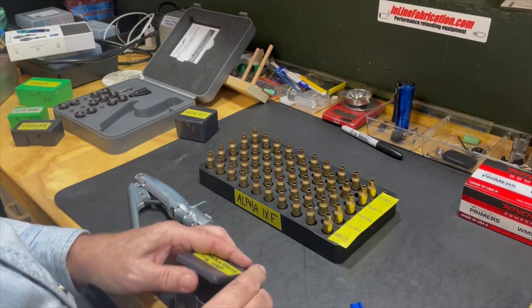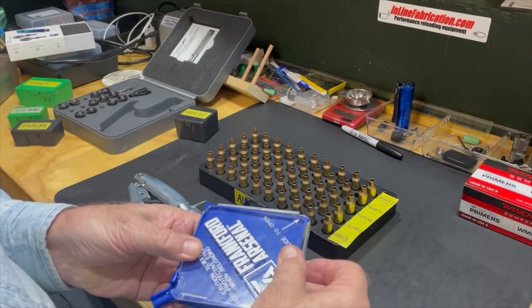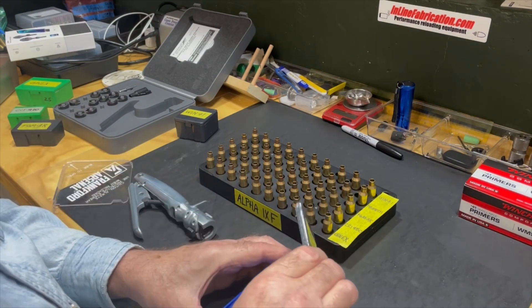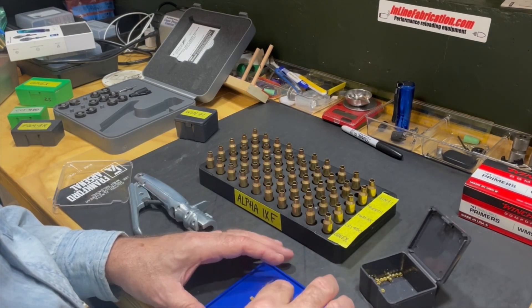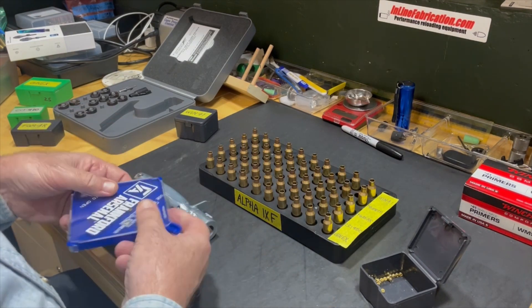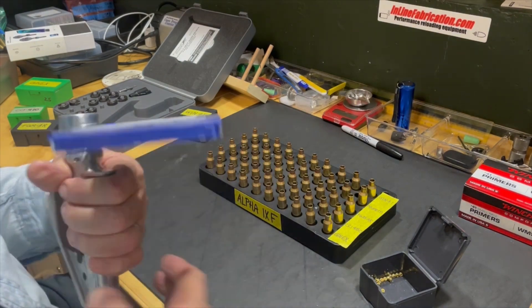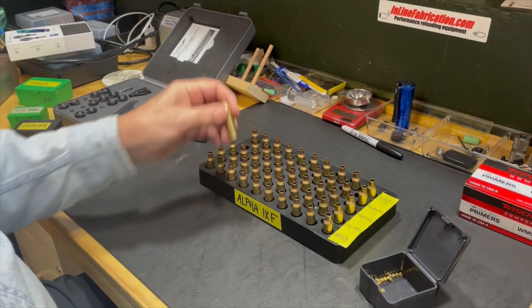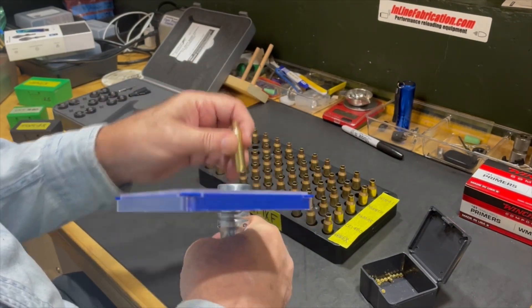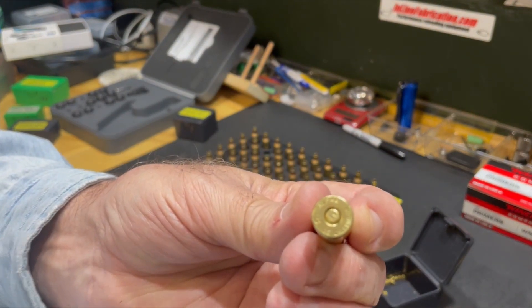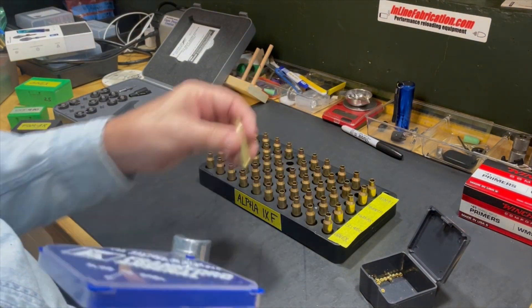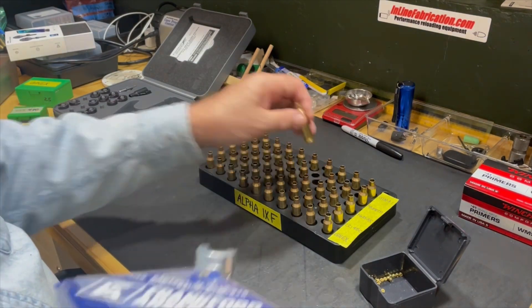I let the primers fall back into the holder and empty them back into the bullet container. Next row is Magtech. I'm only loading 10 so I don't have to put them all in there. Turn them over, reinsert the cover, reinsert the tray into the priming tool, and we start on the second row. We'll continue doing this until the primers for all 50 have been seated.